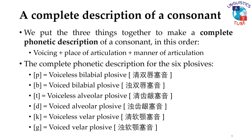Remember that there are six plosives in English. Here are their complete phonetic descriptions: P is a voiceless bilabial plosive. B is a voiced bilabial plosive. T is a voiceless alveolar plosive. D is a voiced alveolar plosive. K is a voiceless velar plosive. And G is a voiced velar plosive.